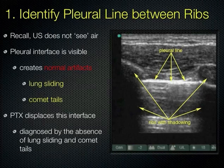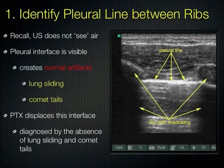If you see B-lines, the patient does not have a pneumothorax, because B-lines originate from interstitial edema in the lung — meaning lung is up at the chest wall, so the lung is not collapsed by definition. That doesn't mean there's no pneumothorax somewhere else; you still need to look in all eight quadrants. But where you're looking, the lung is adhered to the chest wall.